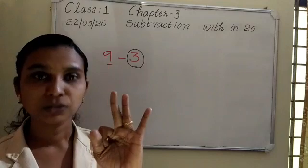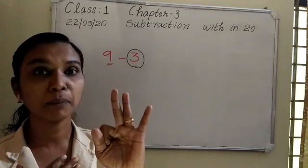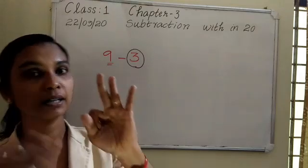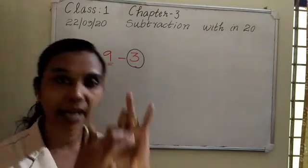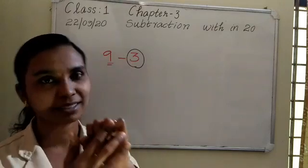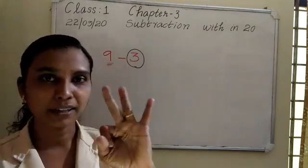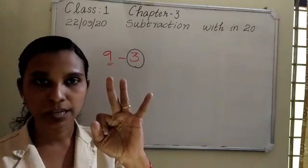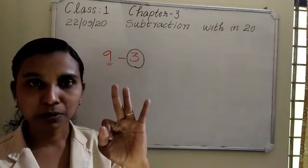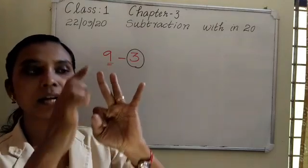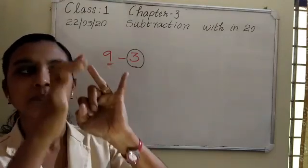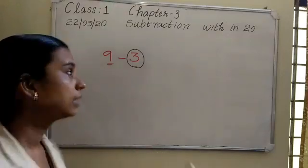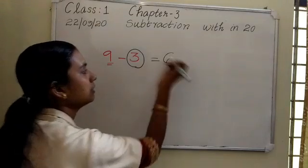The bigger number is 9, so keep 9 in your mind. The number before 9 — count backward from 9 three steps: 8, 7, 6. To subtract 9 minus 3, you count backward from 9: before 9 is 8, before 8 is 7, before 7 is 6. So the difference is 6.